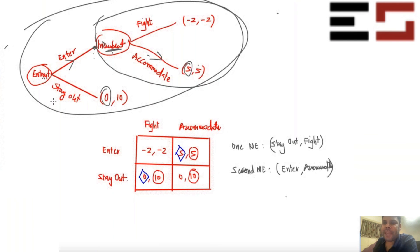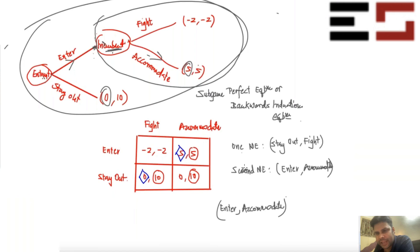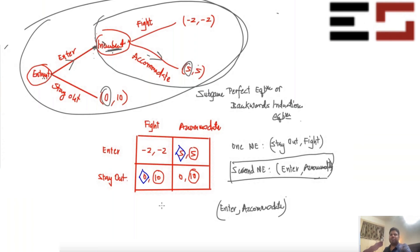This is the backward induction equilibrium, also known as sub-game perfect equilibrium — the refinement I was talking about. The sub-game perfect equilibrium here is enter, accommodate. Notice that it is one of the Nash equilibria. It turns out that sub-game perfect equilibrium is always a Nash equilibrium, but the converse may not be true. There can be more Nash equilibria than sub-game perfect equilibria, which is why we call it a refinement.